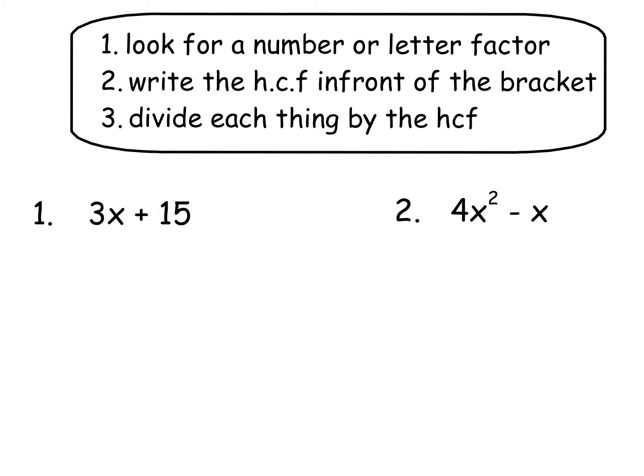So if you have a look at these examples here, my first one has 3x, it's 3x plus 15. So we're going to follow the steps up here. So we look for a number they have in common, they both divide by 3. So step 2 says you put the highest common factor in front of a bracket. So we have 3 bracket. And then you divide everything by that highest common factor, so you divide everything by 3.